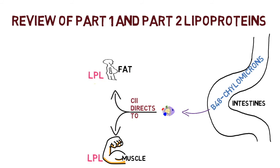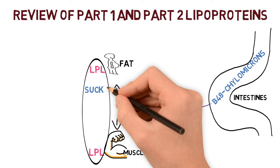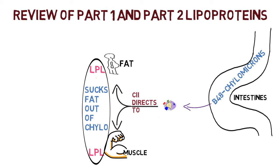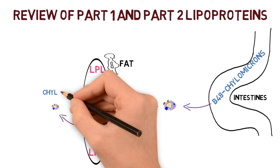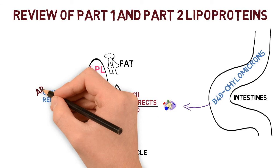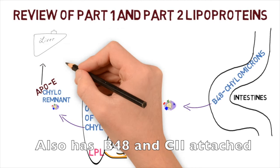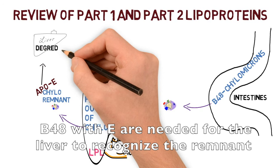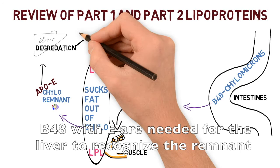ApoC2, when it interacts with muscle cells or fat cells, interacts with lipoprotein lipase, which will suck the fat out of the chylomicrons. This produces chylomicron remnants, which are smaller than the original chylomicron. The chylomicron remnant still has ApoE attached to it, just like the chylomicron does, and that's now going to the liver for degradation.